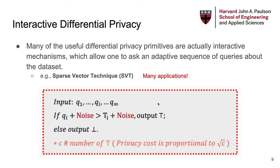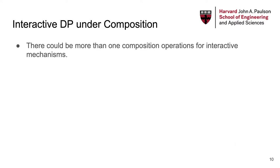SVT is used in adaptive data analysis to prevent overfitting. And to deploy DP in practice, people might also want to support interactive queries.